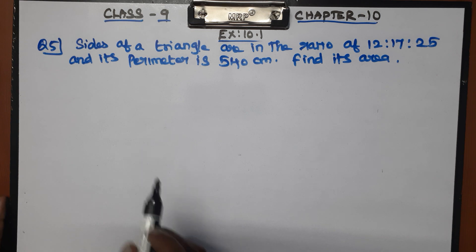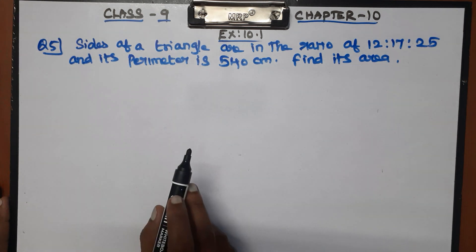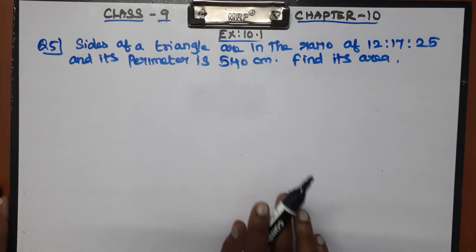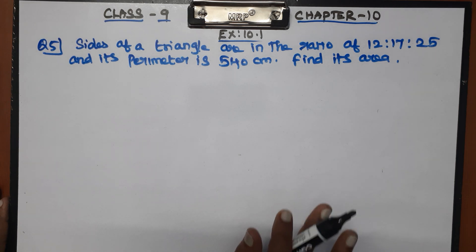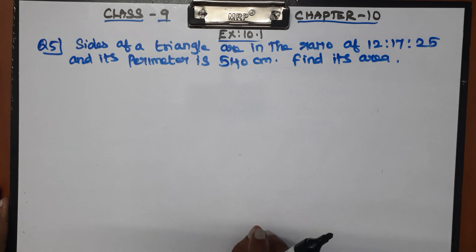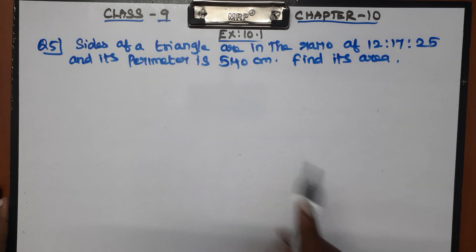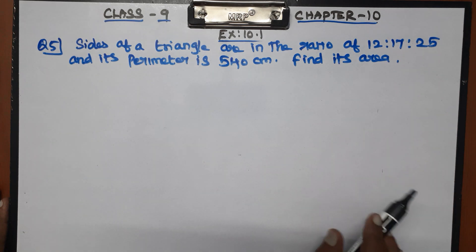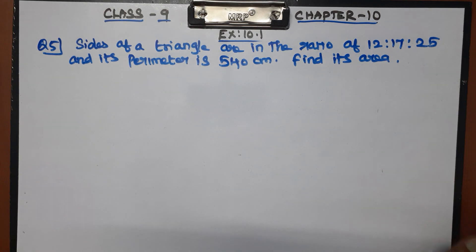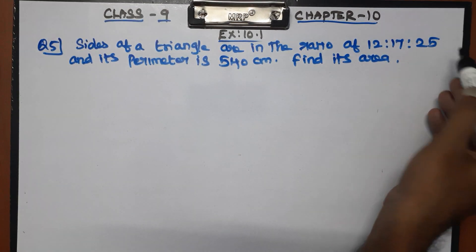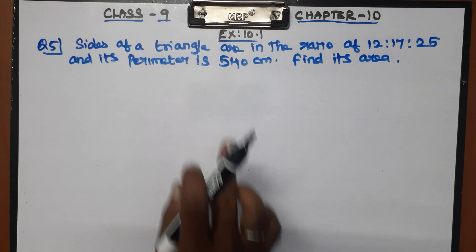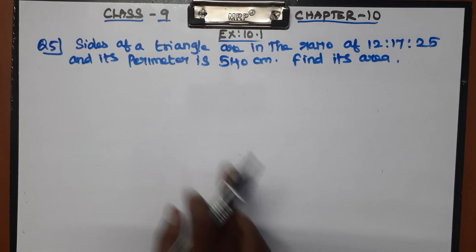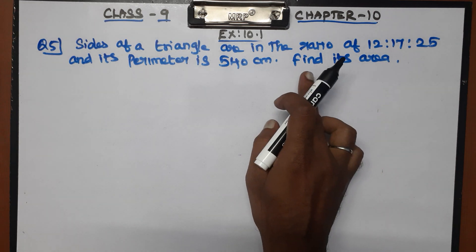Question No. 5 asks about the sides of a triangle ABC. The sides are in the ratio of multiples of 12, 17, and 25. The perimeter is 540 cm. We need to find its area.